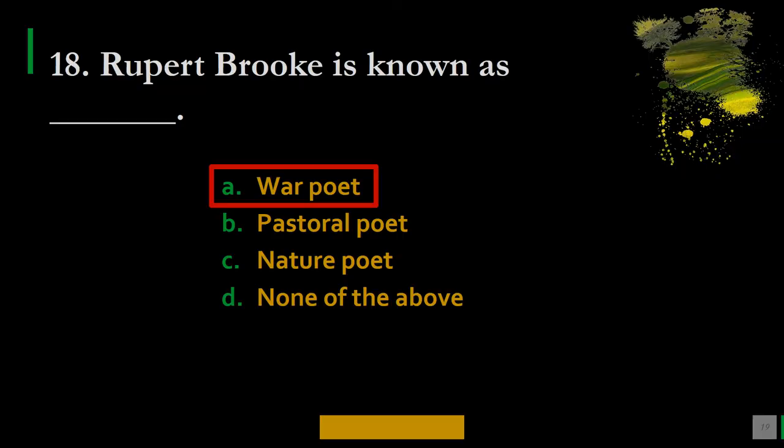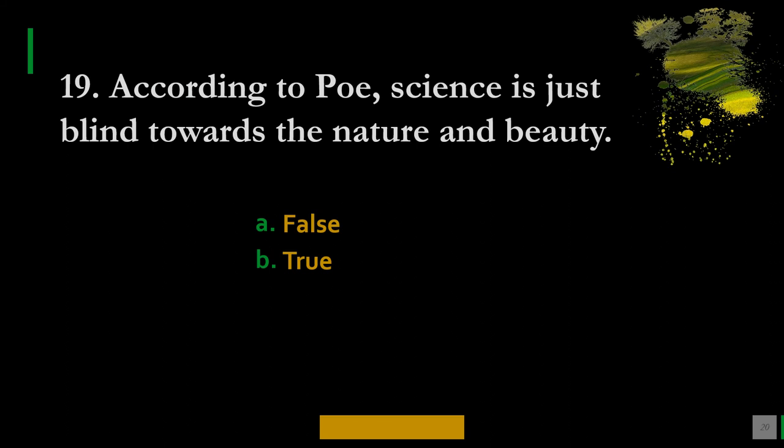Question 19: According to the poet, science is blind towards nature and beauty — A. False, B. True. The correct option is B — true, because Edgar Allan Poe thinks that science is blind towards nature and beauty.